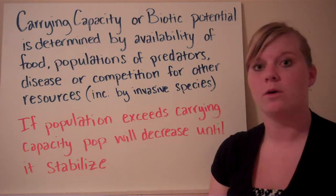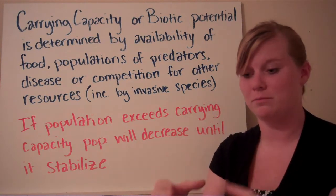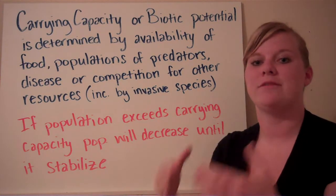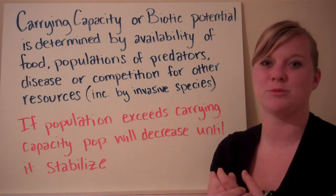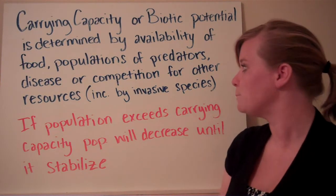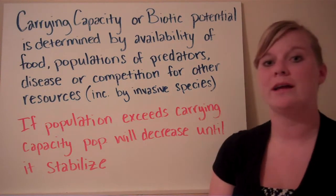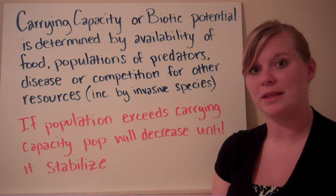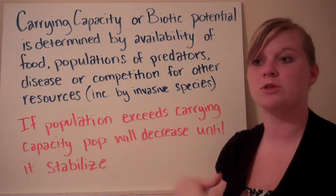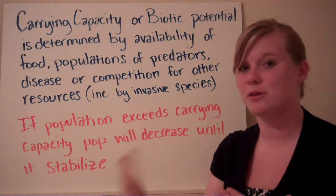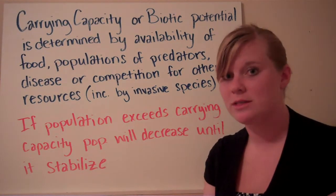Competition for other resources is also a factor — especially with plants, sunlight is a big one. If you plant a tree sapling in the shade of another tree, that larger tree is much more able to compete for sunlight. This is increased by invasive species: the more non-native species you introduce to an ecosystem, the more competition there will be for resources, since you now have one more species competing.